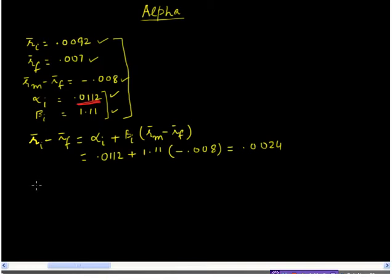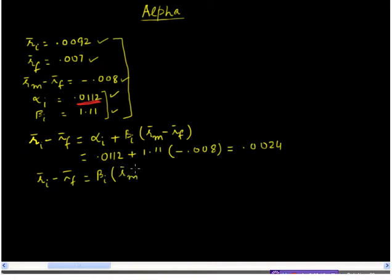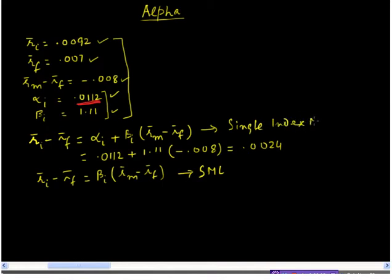Now let us look at alpha from CAPM's viewpoint. We need to look at the equation for the SML. The SML equation says that RI bar minus RF bar — the average excess return on the security — can be predicted as beta of the security times the average excess return on the market.